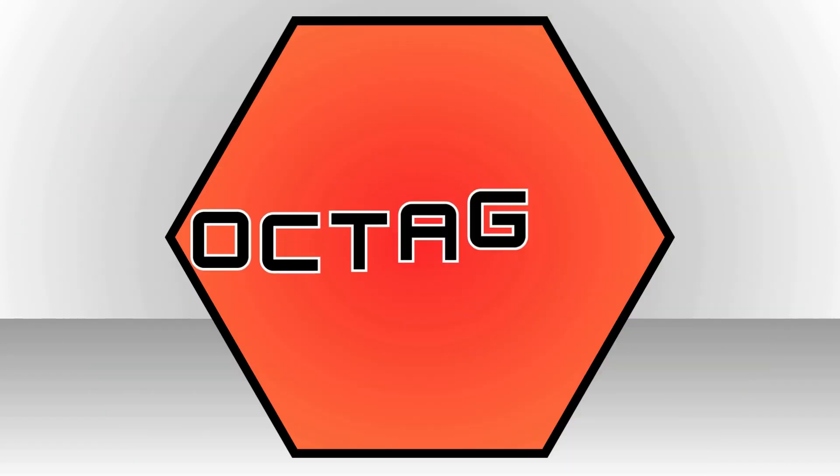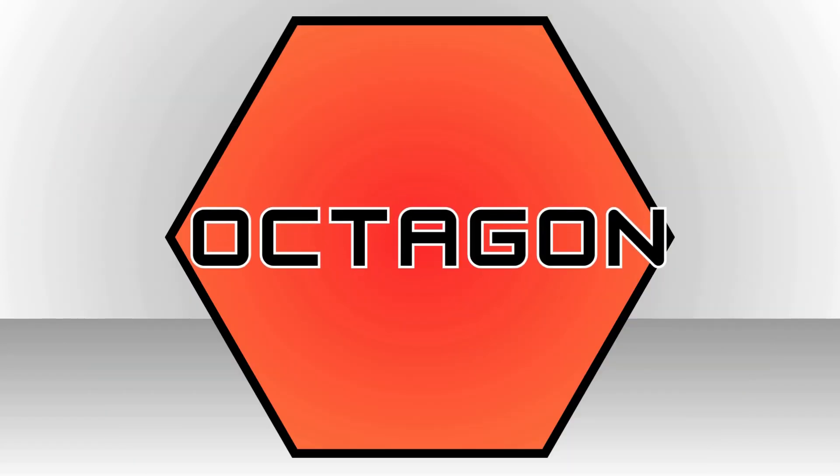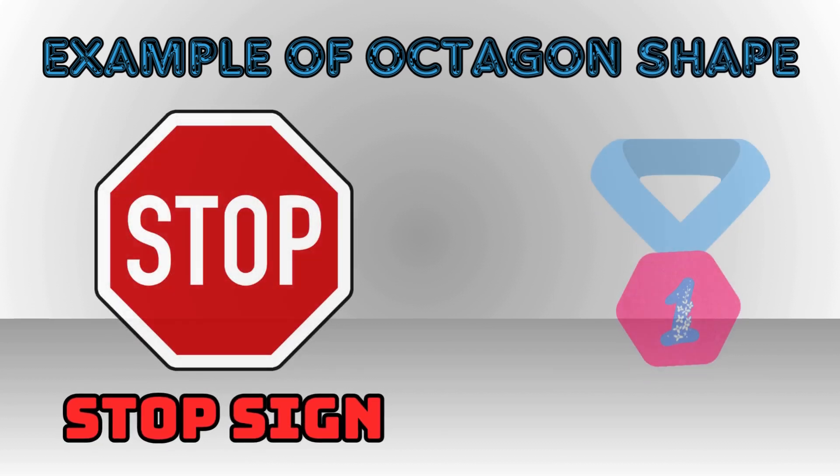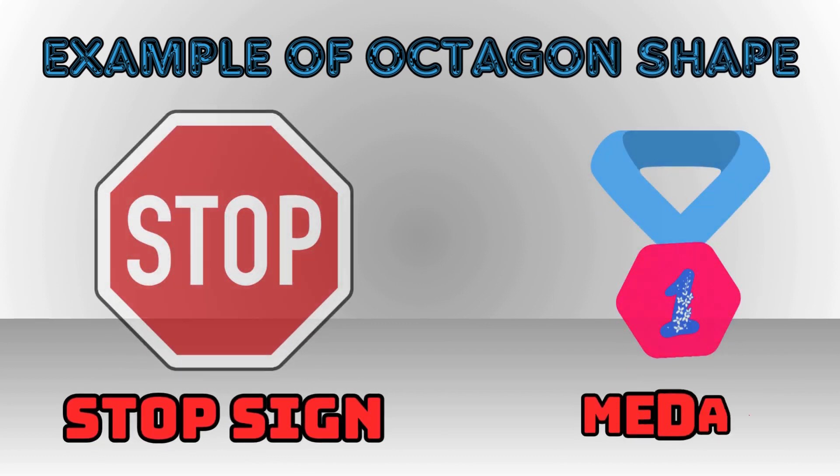This is an octagon. Example of octagon shape: stop sign and metal.